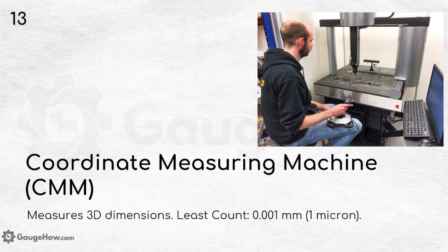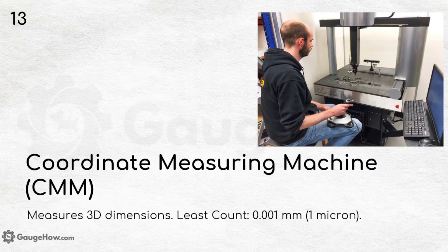Coordinate measuring machine (CMM). As shown in the picture, a worker handles the CMM using a proper handle. It measures 3D dimensions with a least count of 0.001 mm, or 1 micron.